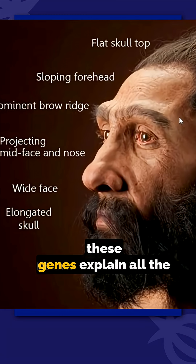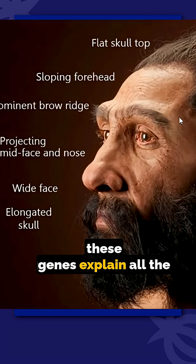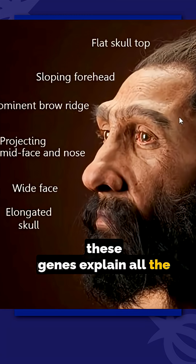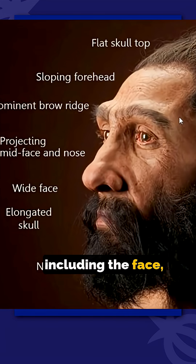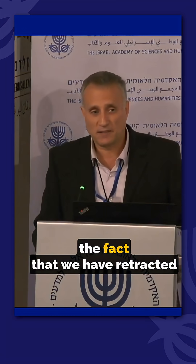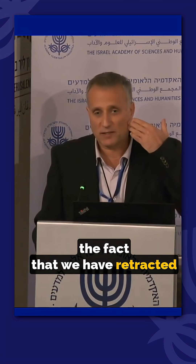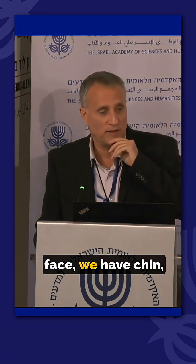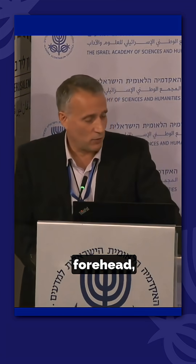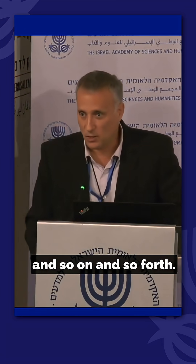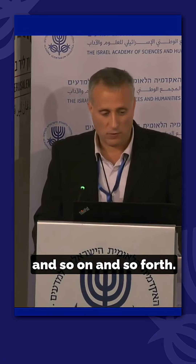Together, these genes explain all the known differences in the skull morphology between us and Neanderthals, including the face — the fact that we have a retracted face, we have a chin, we have a high forehead, and so on and so forth.